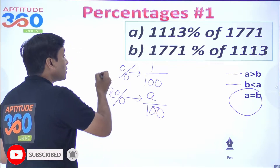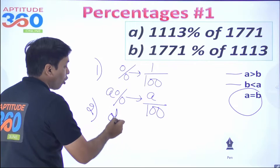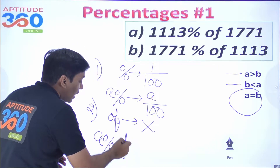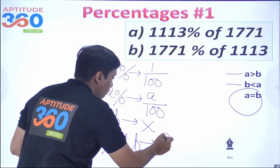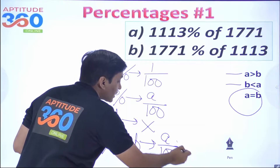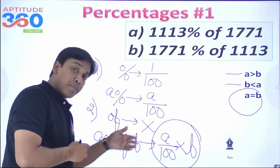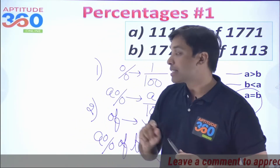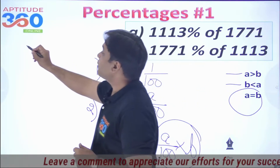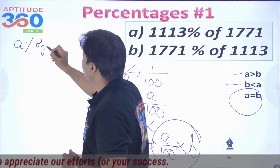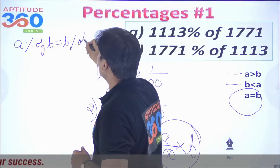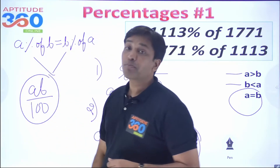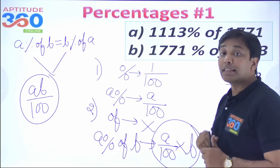Another thing we have been taught is that 'of' means product. So if I write 'a percent of b', how should I write this in mathematics? I would write this as a over 100 times b. That is the meaning of 'a percent of b'. So percentage means 1 by 100 and 'of' means a sign of product or multiplication. So can you figure out that 'a percent of b' and 'b percent of a' both give you the same value, which is ab over 100?